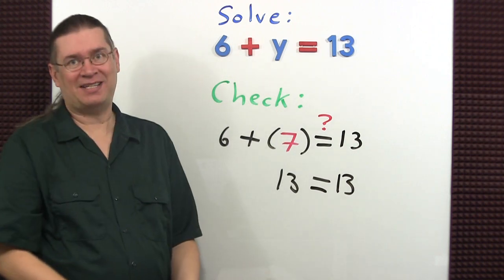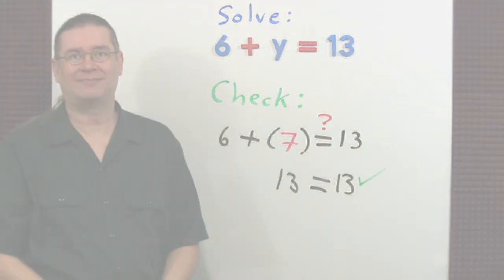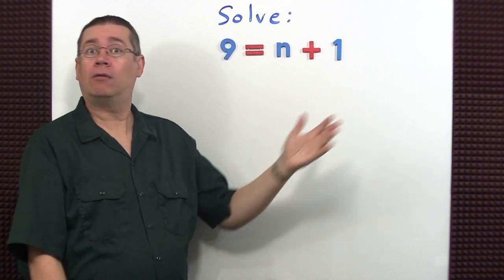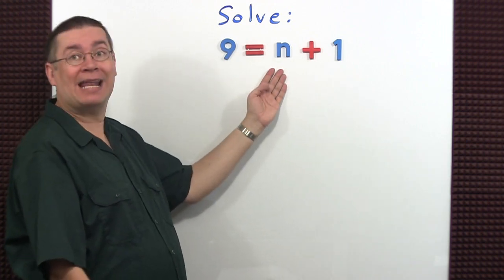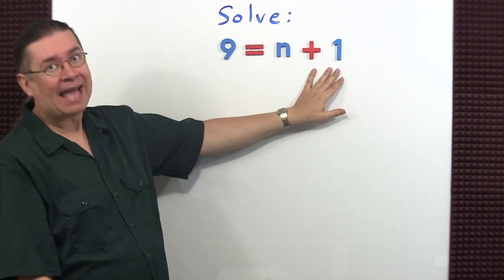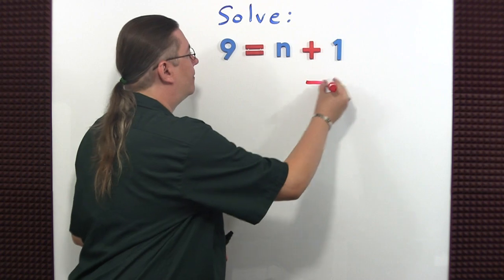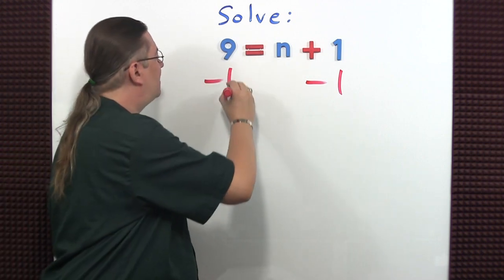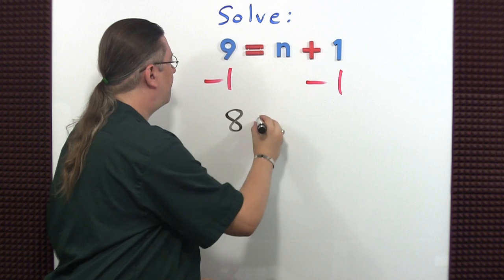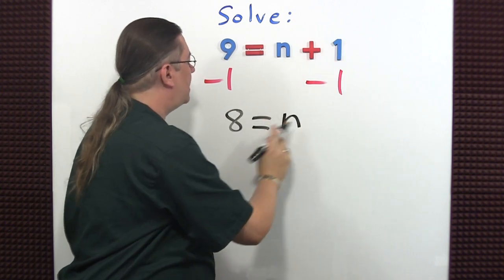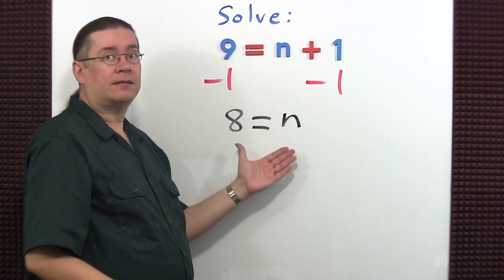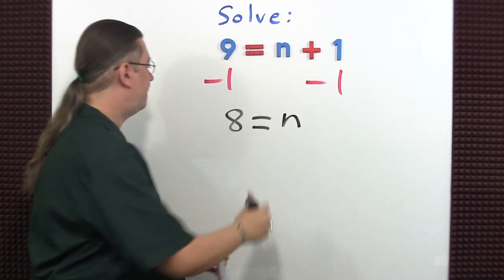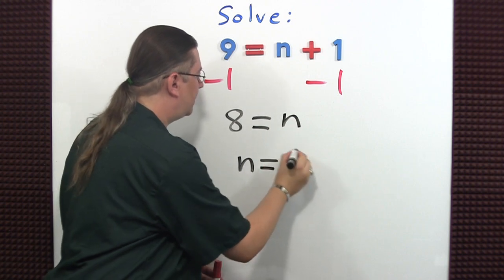Now we're presented with an equation where the variable is on the right-hand side. What do we do? Well, just do what we've been doing beforehand: isolate the variable, get it by itself. One is being added to it, so just subtract one. What you do to one side of the equation you must do to the other side. 9 minus 1 is 8, and that's going to equal n. This is a solution, however we traditionally would like to have the variable on the left-hand side, so go ahead and just switch places and write down n equals 8.